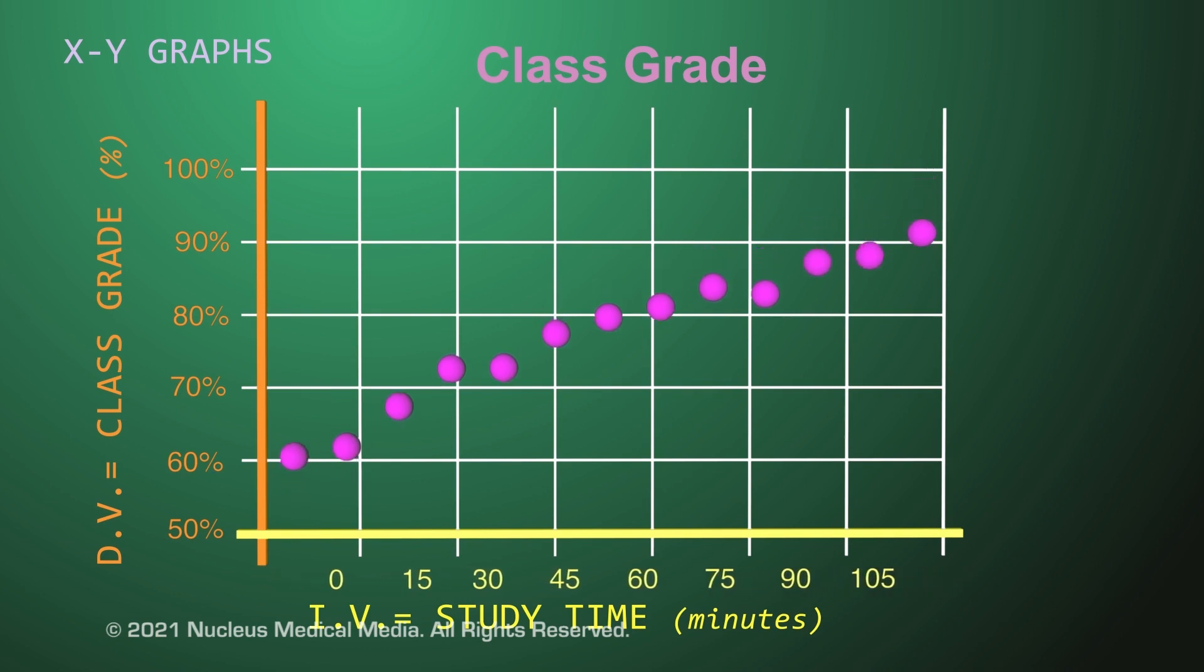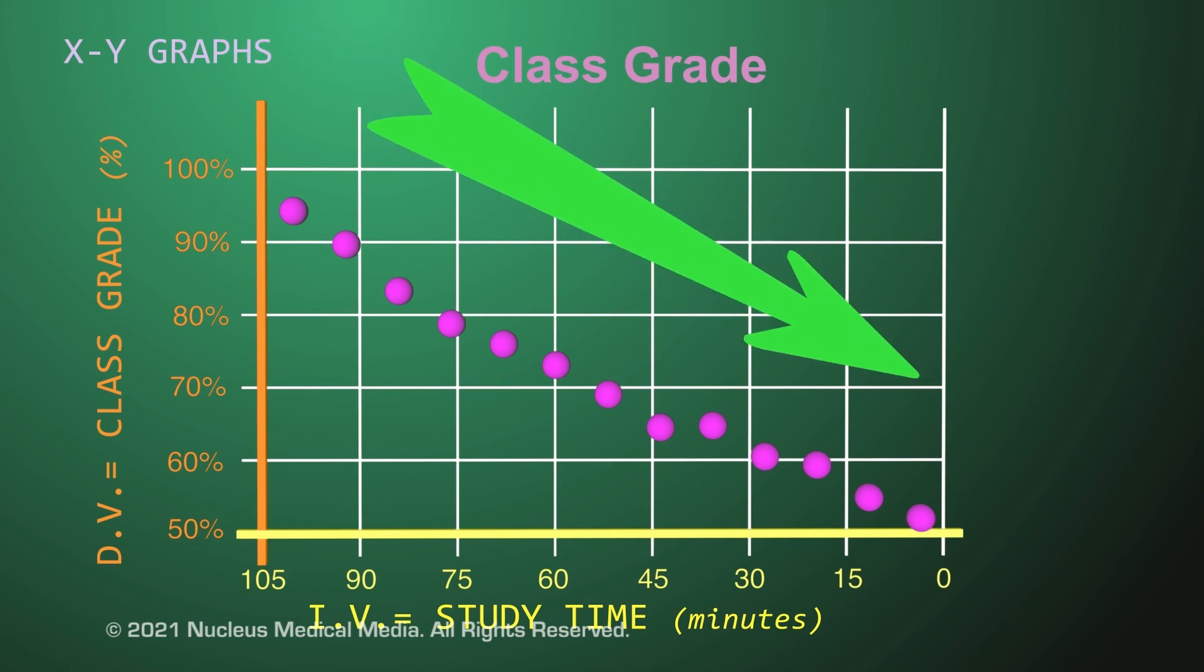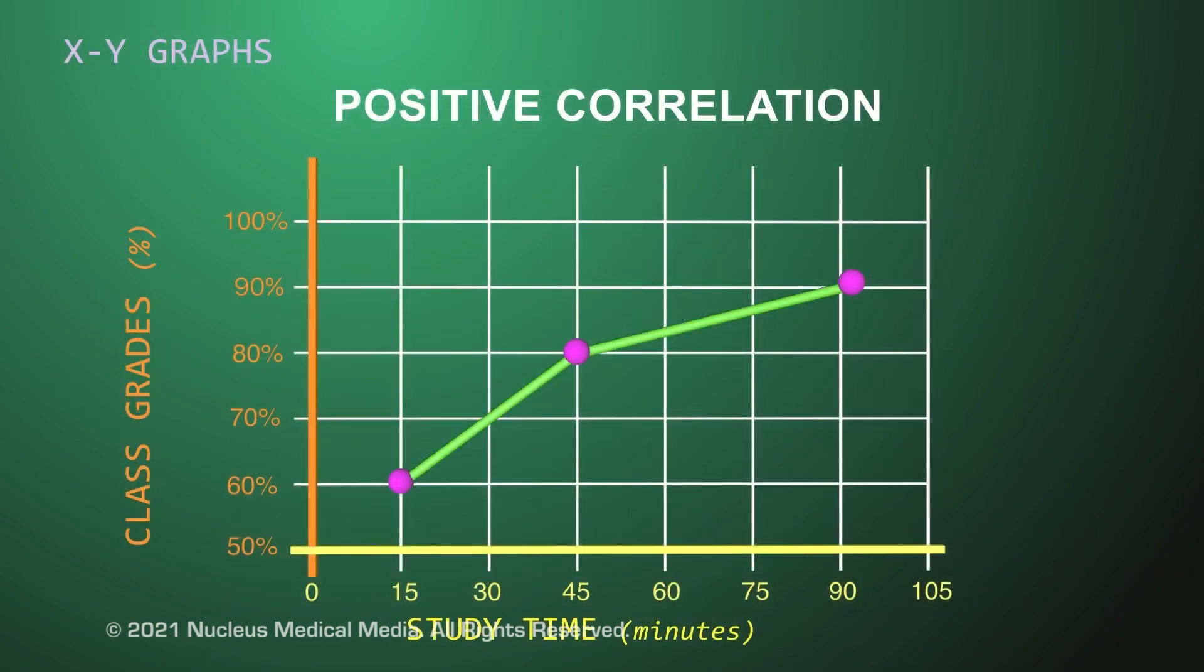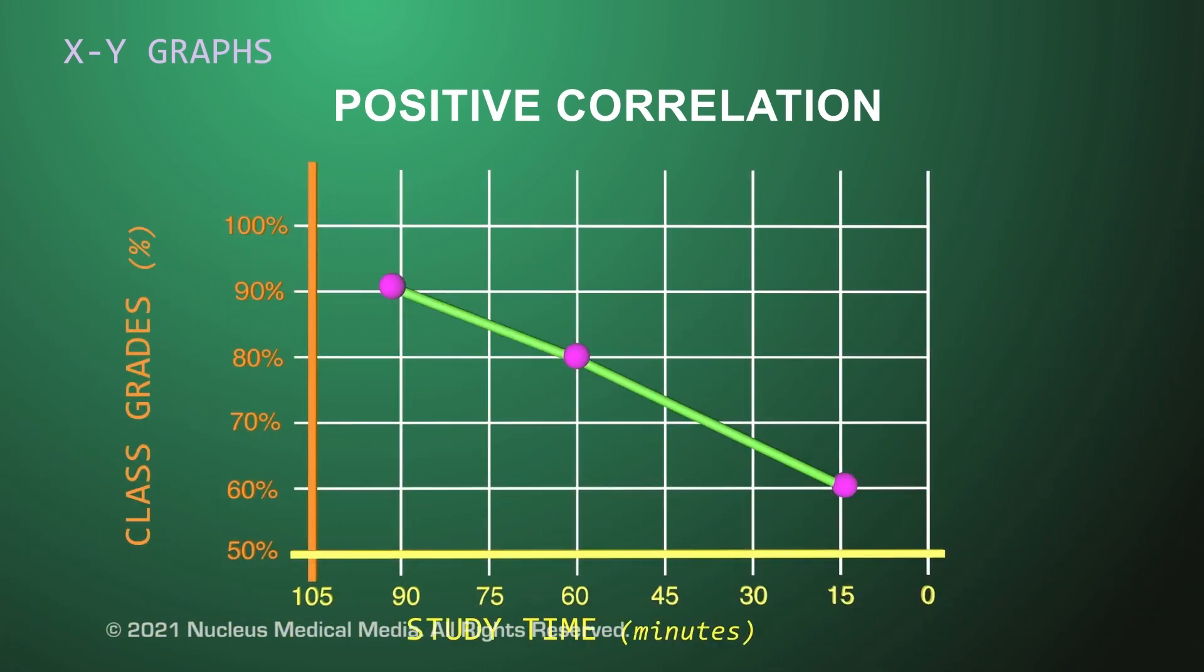Now let's change the graph to show how class grades are affected as the study time goes down. If the values of both variables go down, then a line connecting the data points will show a downward trend on the graph. Note that this is also described as a positive correlation. A positive correlation means the values of both variables are increasing or that the values of both variables are decreasing.